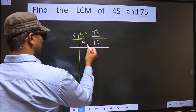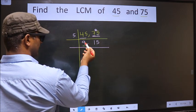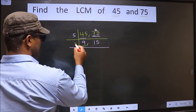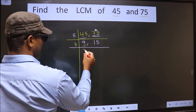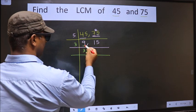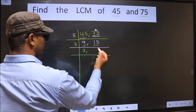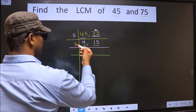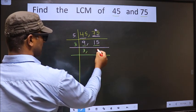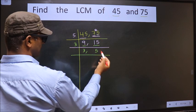Now we have 9 here. 9 is 3 threes. The other number is 15. When do we get 15 in the 3 table? 3 fives are 15.